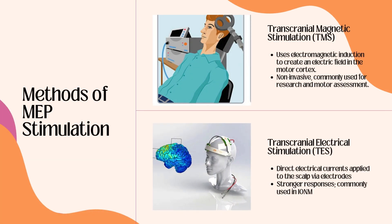There are two primary methods used for MEP stimulation: TMS and TES. TMS, or transcranial magnetic stimulation, uses electromagnetic induction to create an electrical field in the motor cortex. Due to its non-invasive nature, TMS is commonly preferred in research and motor assessment. The one we are going to be focusing on is transcranial electrical stimulation, or TES. In this case, direct electrical currents are applied to the scalp via electrodes. TES is preferred in surgical settings due to its reliability in detecting motor pathway disruptions, because it produces stronger responses.